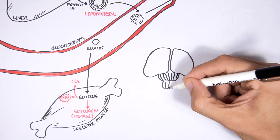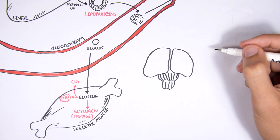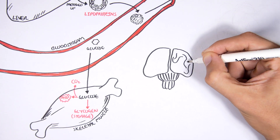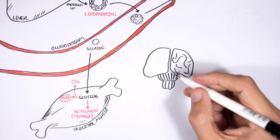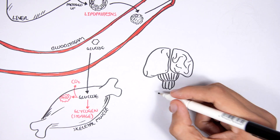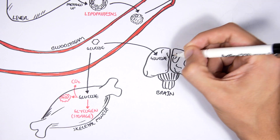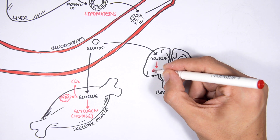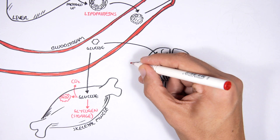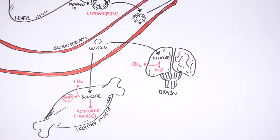Glucose can also supply the brain with energy. The brain's main source of energy is glucose, and in the brain, glucose will produce ATP and carbon dioxide as waste.